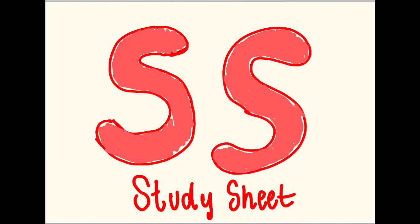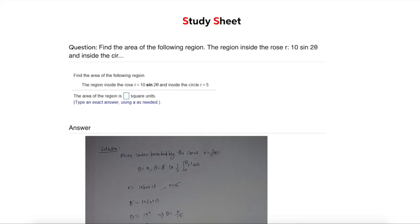Hello, and welcome back to Study Sheet. Find the area of the following region: the region inside the rose R equals 10 sine 2 theta, and inside the circle R equals 5. The area of the region is blank.